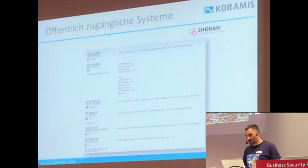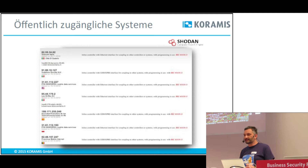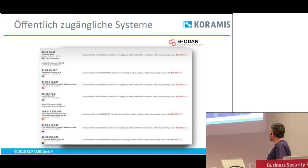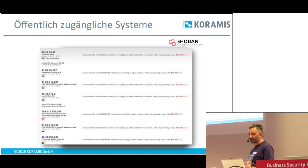Einfach exemplarisch kann ich hier ein System raussuchen. Ich habe hier eine PLC mit sieben bekannten Schwachstellen und einem bekannten Exploit. Also nur um die Frage zu beantworten: Sind kritische Infrastrukturen im Netz verfügbar? Ja. Sie können solche kritischen Infrastrukturen auch in Massen suchen, beispielsweise mit einer Suchmaschine wie Shodan.